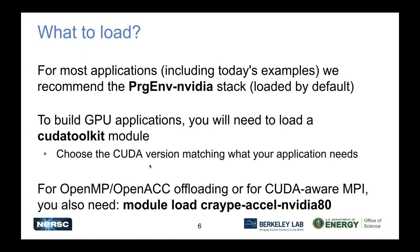If you're doing OpenMP or OpenACC offloading, or also using CUDA-aware MPI, you'll also need to load one of the CrayPE Excel modules - in particular, we want nvidia_80. This number 80 is the architecture version number of our GPUs: SM80, which is the Ampere series. If you used Cori GPU, you will have seen SM70, which was the Volta GPUs we had before.